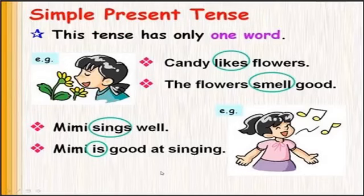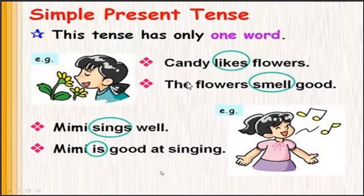Simple Present Tense has only one word. Examples: Candy likes flowers. The flowers smell good. Mimi sings well. Mimi is good at singing.